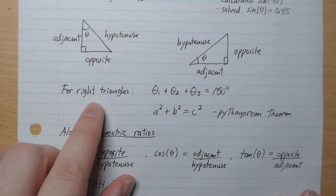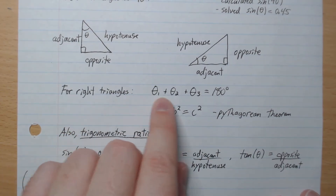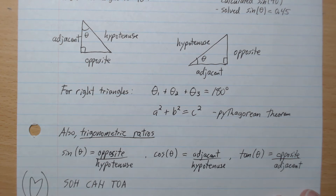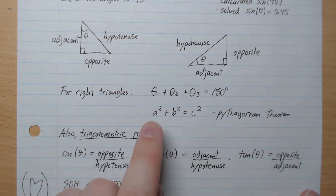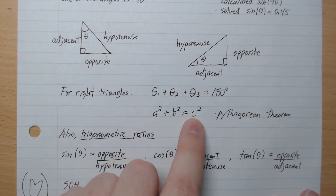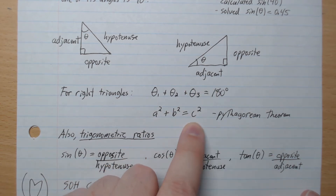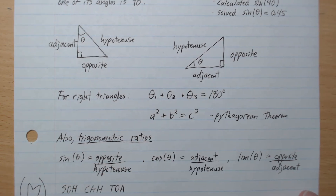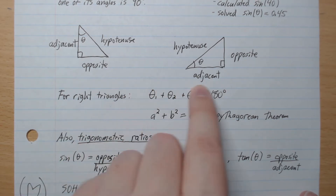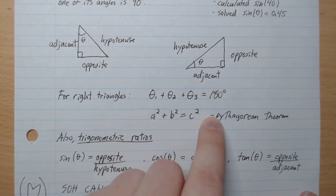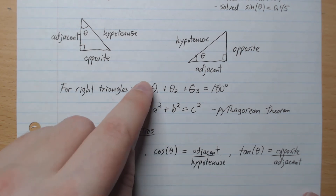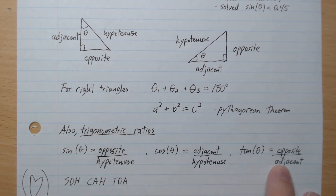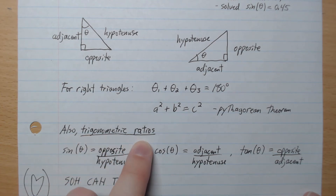For right triangles, all the angles add up to 180. We also know that the Pythagorean theorem gives us a squared plus b squared equals c squared, where c is the hypotenuse. Here are the relationships between the angles, and this is a relationship between the sides. There's another relationship that's between angles and the sides, and they're called the trigonometric ratios, or just trig ratios for short.